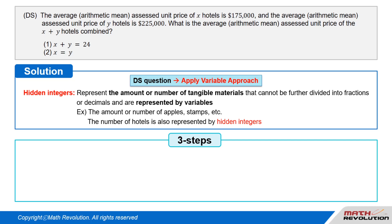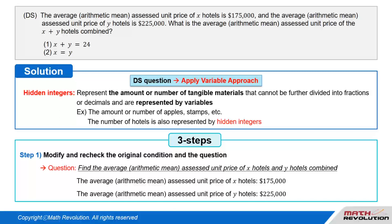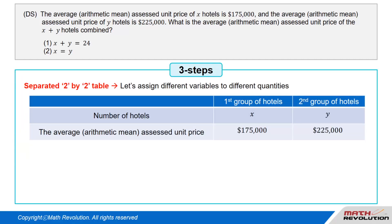Let's apply the three steps suggested previously. Follow the first step of the variable approach by modifying and rechecking the original condition and the question. We have to find the average or arithmetic mean assessed unit price of X hotels and Y hotels combined. This question can be converted into a separated 2x2 table — a type of question that has frequently appeared on the most recent GMATs. Let's assign different variables to different quantities as shown in the table.